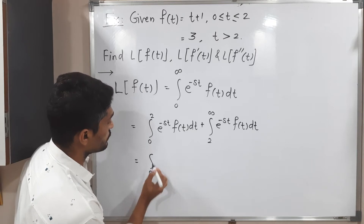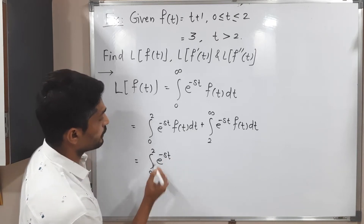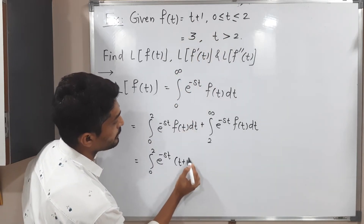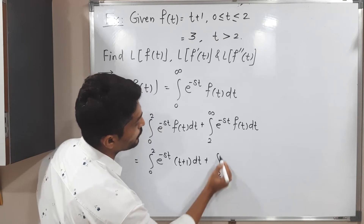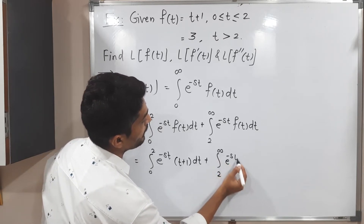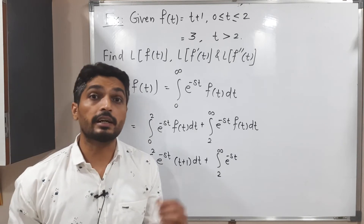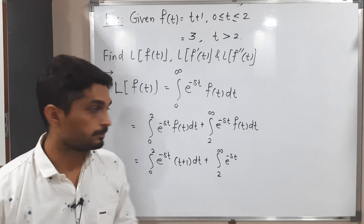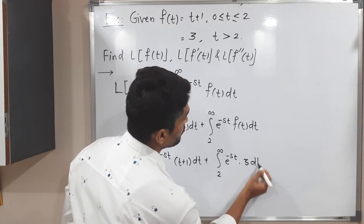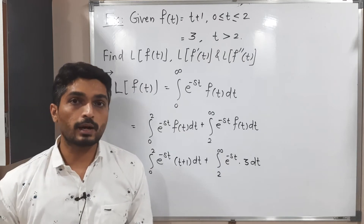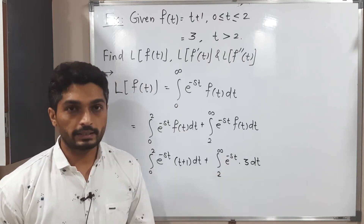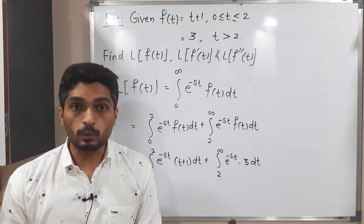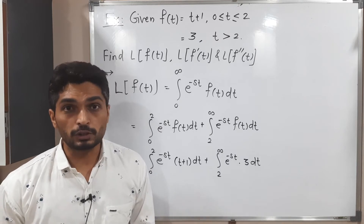So this is equal to: integration from 0 to 2 of e raised to minus s t times f of t dt, plus integration from 2 to infinity of e raised to minus s t times f of t dt. For 0 to 2, the value of f of t is t plus 1, and for t greater than 2, the value of f of t is 3. The second integral is comparatively easy since 3 is a constant and will come outside.